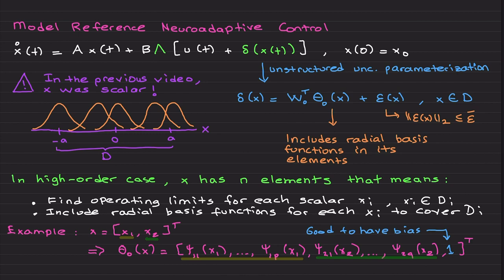But X was scalar. In that case, we only had one X. If our system X is operating between minus A and A—this doesn't have to be symmetric, minus A to B also works—then to cover this domain, we were placing radial basis functions. If we include more, more, more, more, this epsilon was going down.